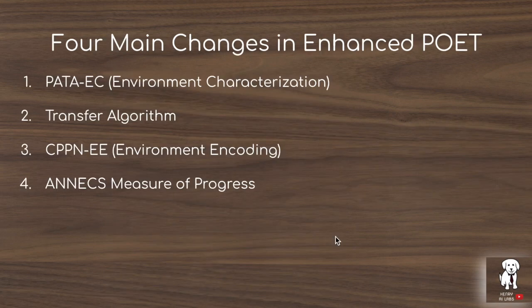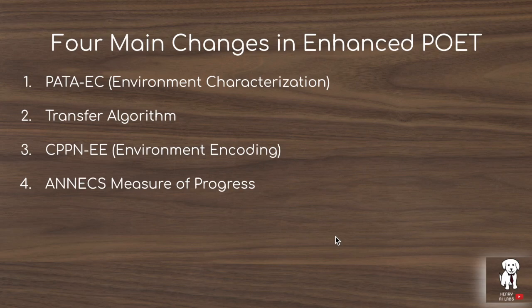There are four major changes in the Enhanced POET algorithm. The first is the PATAEC — the Performance of All Transferred Agents Environment Characterization. In the original POET algorithm, environments are defined by parameters like terrain roughness, ditch depth, and obstacle frequency. That kind of characterization doesn't transfer well outside of the bipedal walking environment because it's very domain specific. The idea is to have a more general representation for characterizing environments, which relates to how we parameterize and encode environments using the CPPN encoding introduced as the third enhancement.